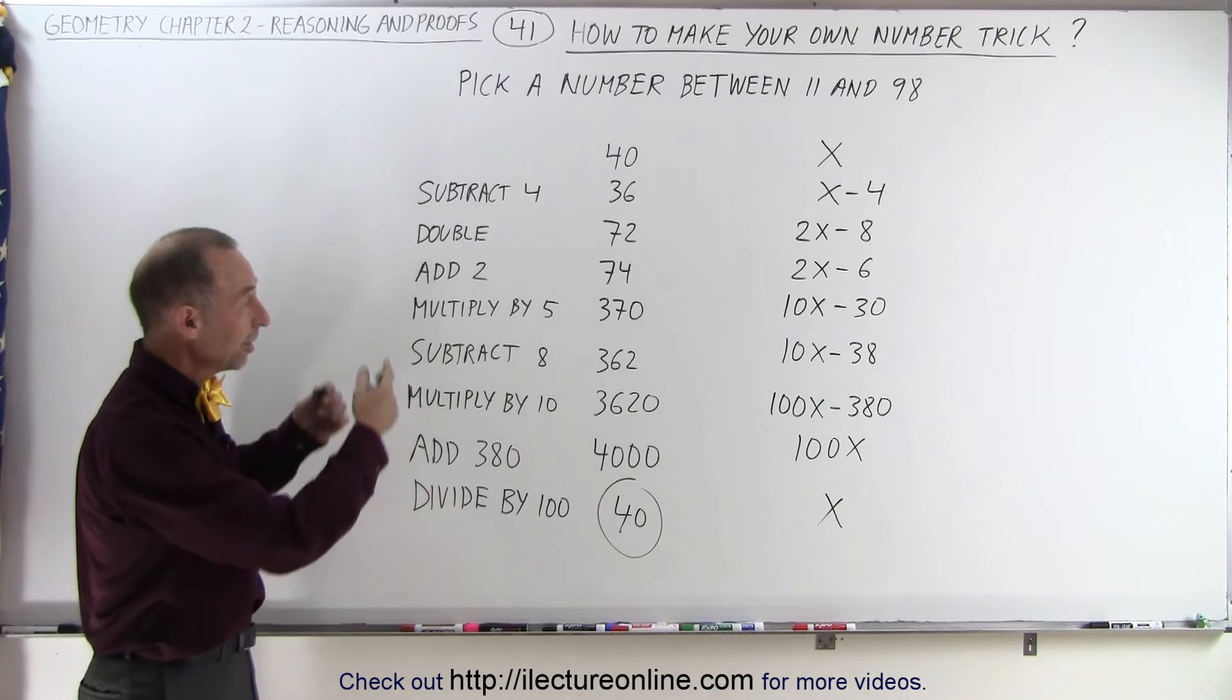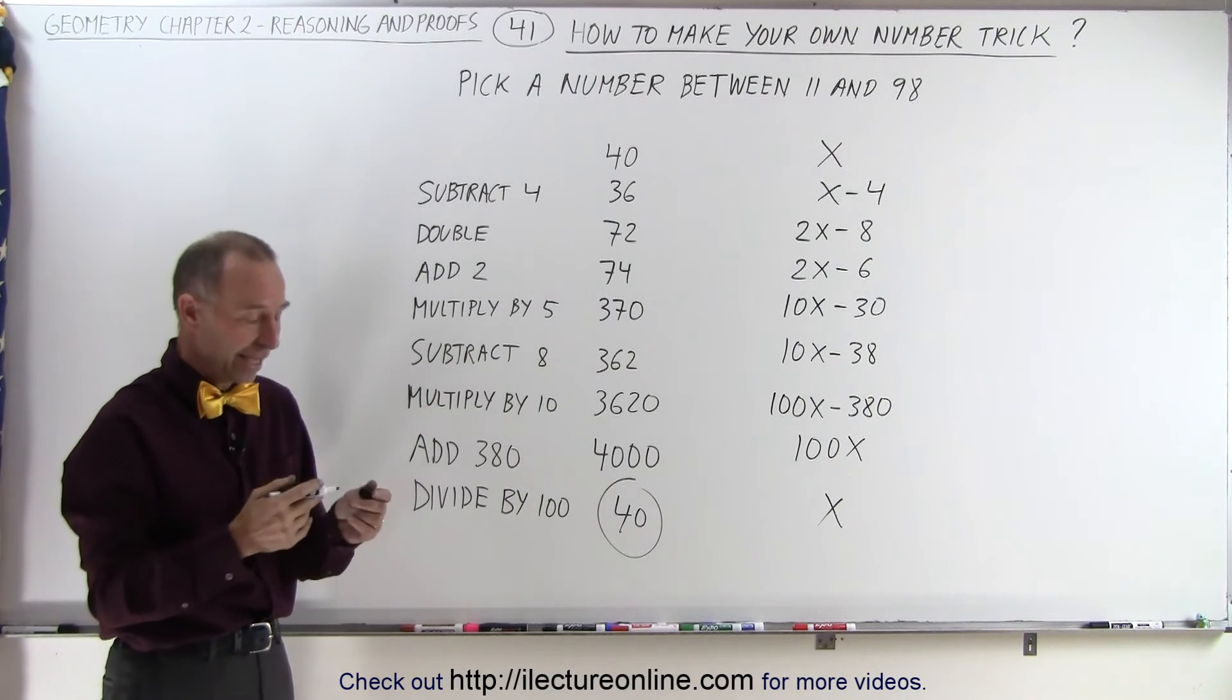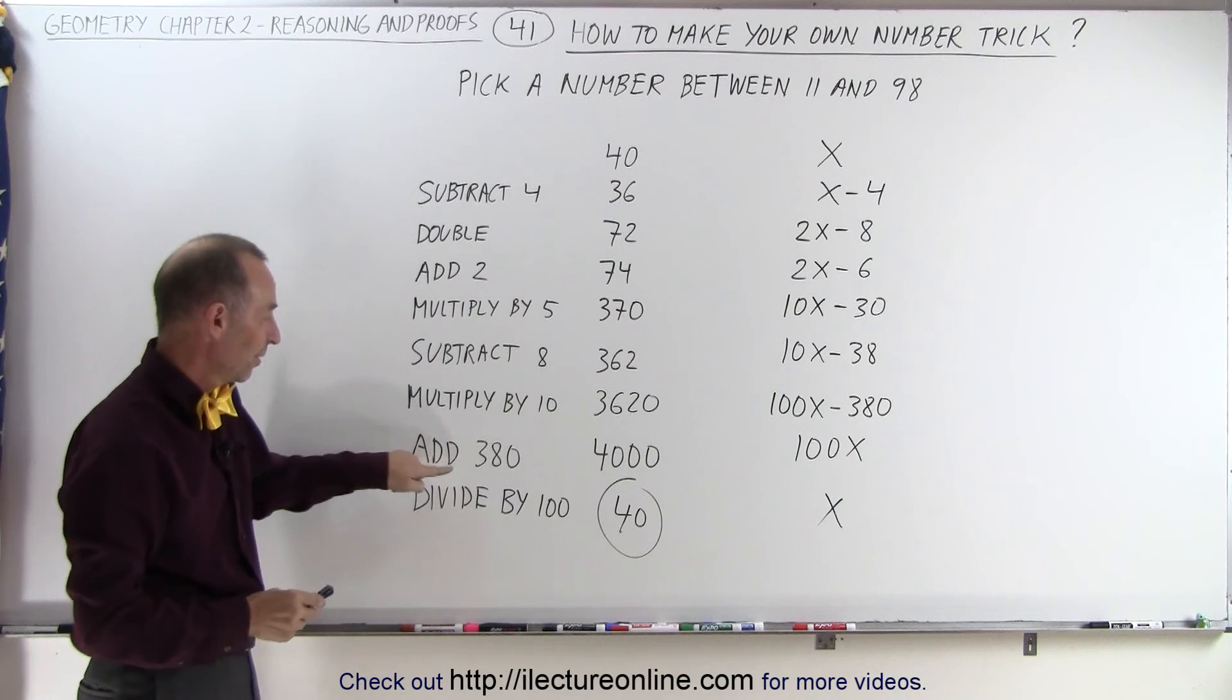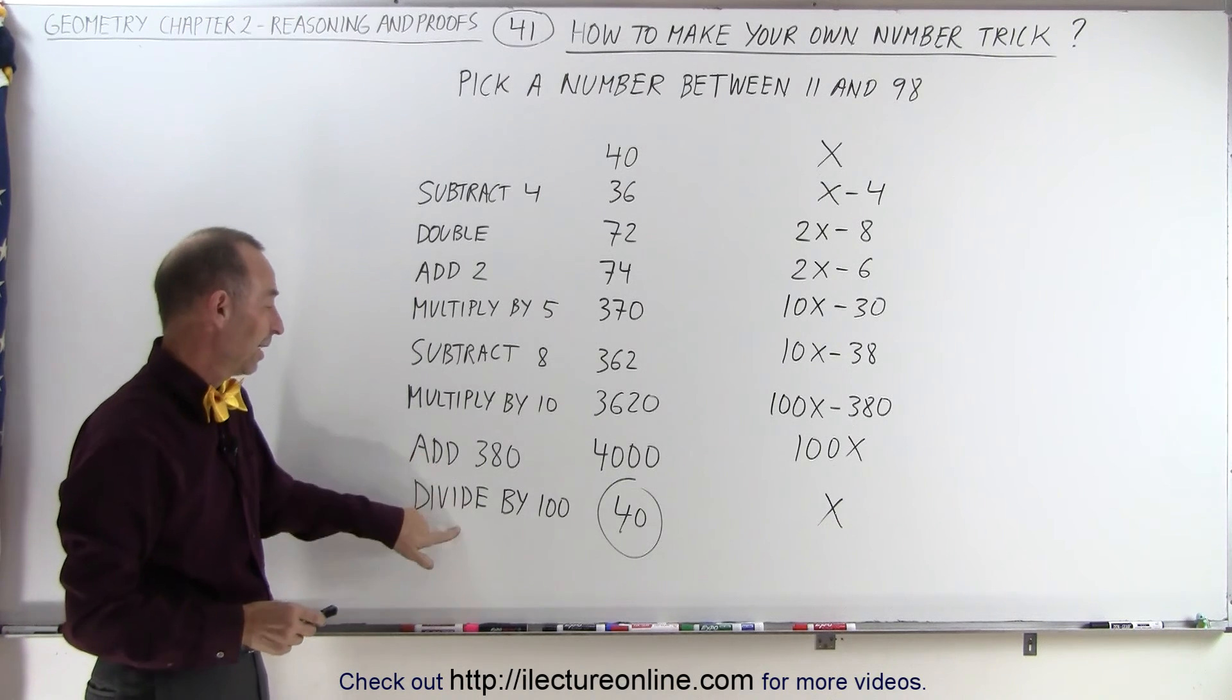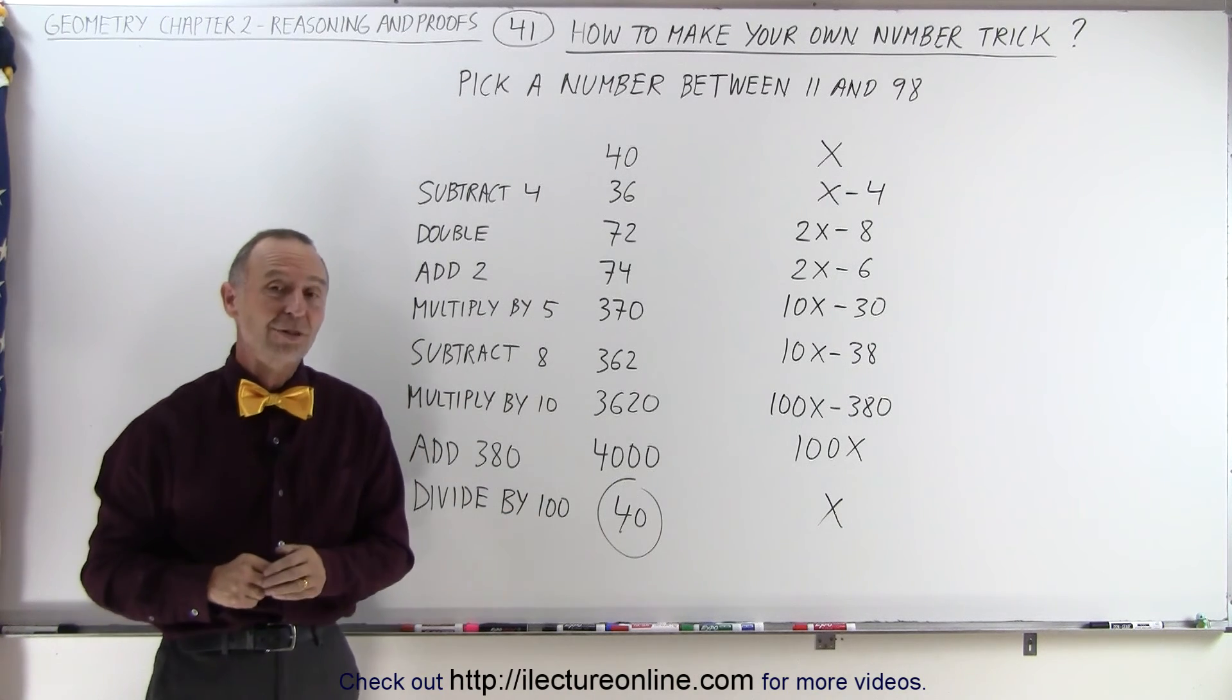So you can see, you can come up with just about any combination, as long as at the end you make the adjustment over here, divide by 100, and you're all set.